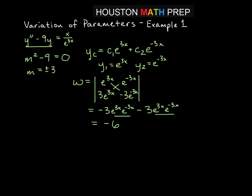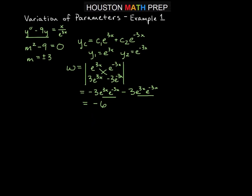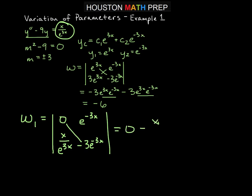And now we need to continue by finding w1 and w2 as well. Remember for w1, the 1 telling us to take out the first column of our original Wronskian and replace it with all 0's except for the last entry being equal to g sub x. So we'll have 0 and then x over e to the 3x, which is our g of x up there. So we'll leave the second column alone, e to the minus 3x, negative 3 e to the minus 3x. We do our determinant. The first term will be 0 there, minus x over e to the 3x times e to the minus 3x. And so that will then give us there negative x e to the minus 6x would be the simpler way to write that.